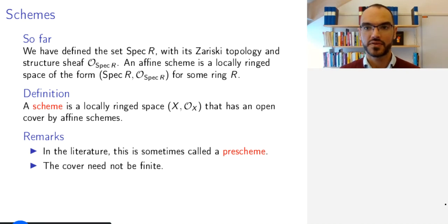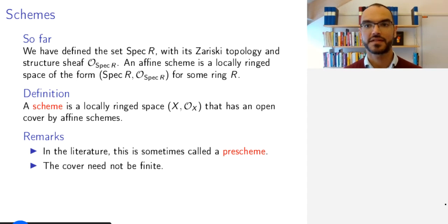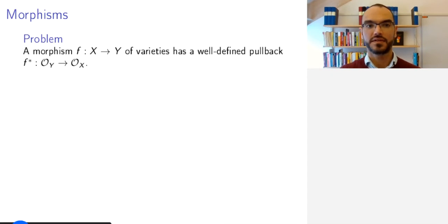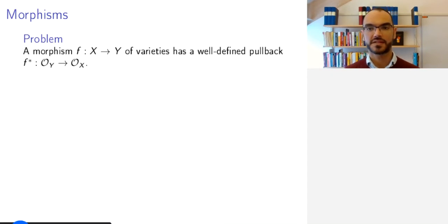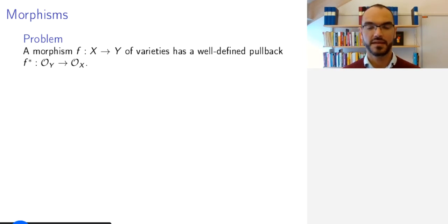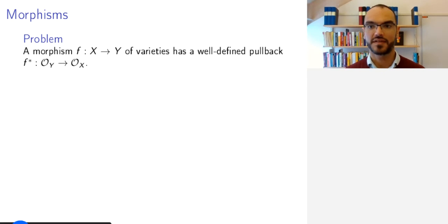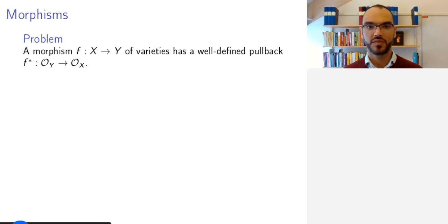We are now in a position to start studying schemes more closely, now that we know what a scheme is and have a particular defined scheme. The next step is to study morphisms between schemes. This is important both to embed schemes in a categorical framework and also to understand how to map things between different schemes. As usual, we will try to mimic what we know for varieties.